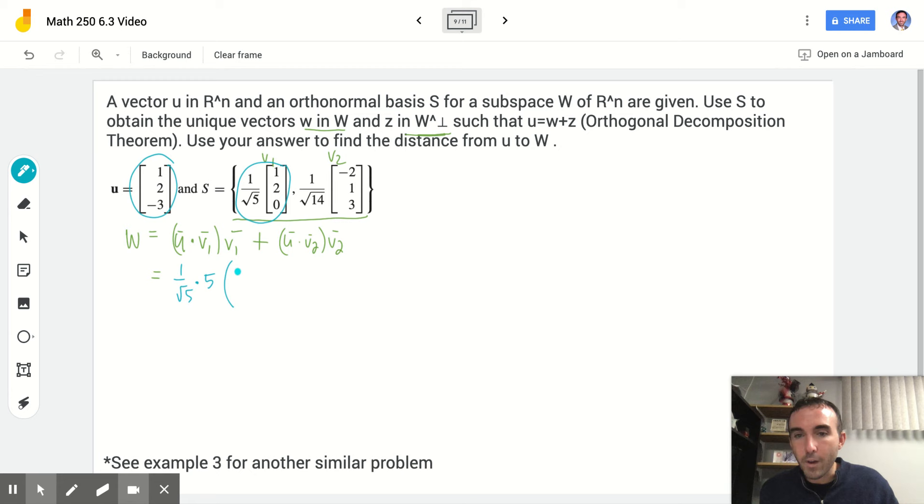And I'll leave the v1 vector there. And I forgot the radical 5 on the bottom. Okay, so that also goes there. So then for the next one, I have vector u, and I'm finding the dot product with this vector over here. So I will leave the radical 14 outside. And then I have 1 and negative 2 is negative 2, 2 and 1 is 2. So that 0 is out. Negative 3 and 3 is negative 9. So I got that. And then I multiply that by the original vector. So that's over radical 14, negative 2, 1, 3.